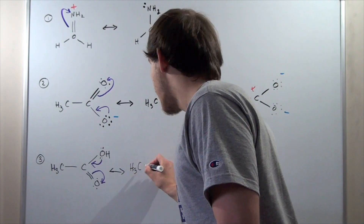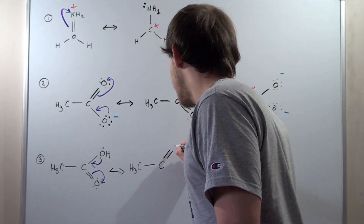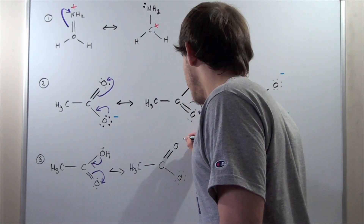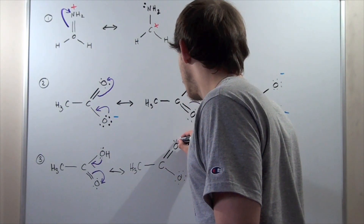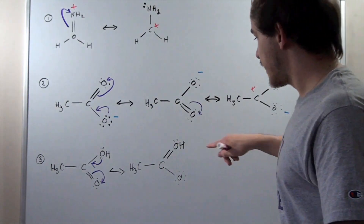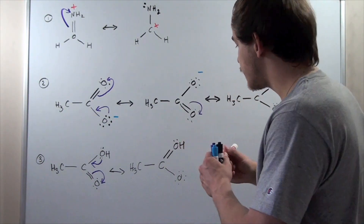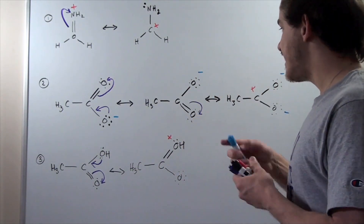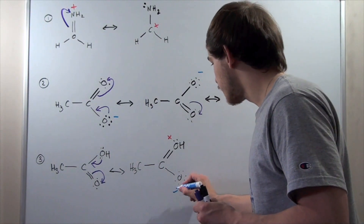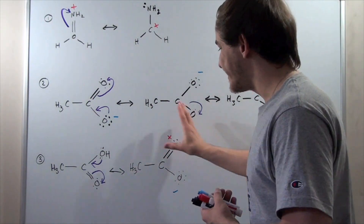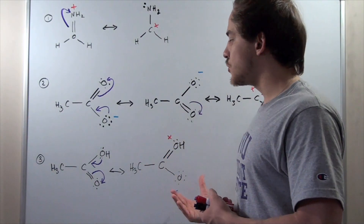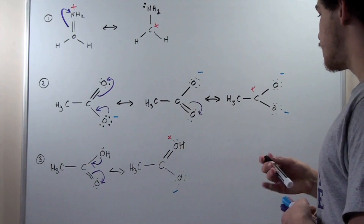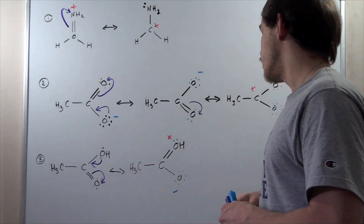Remember, our atoms don't actually move — atoms stay the same. Now we have the following picture: here we have an H. Notice what happens — this develops a plus 1 charge, and this develops a negative 1 charge. The overall net charge on the entire molecule is still 0, just as it is in the original.